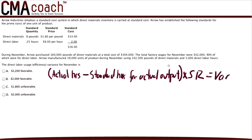A total of 5,000 direct labor hours were actually used in production — that's a given. We're also told that 19,000 units of product were manufactured during the period. The standard direct labor hours allowed for production of one unit is one quarter of an hour, and that's also a given.